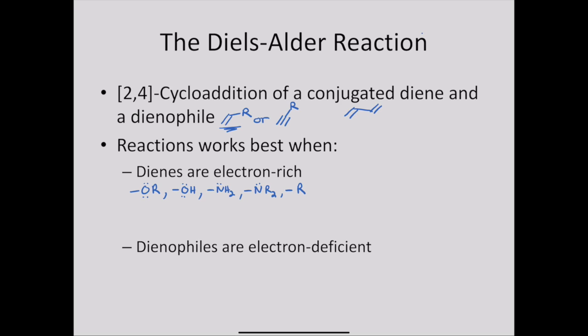For the dienophiles, the Diels-Alder reaction works best if they are electron-deficient.